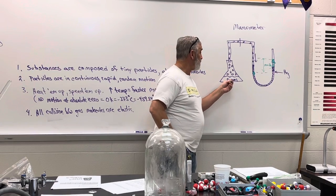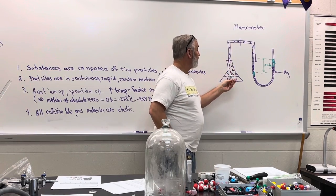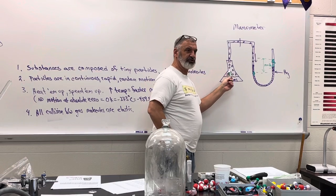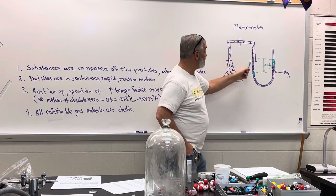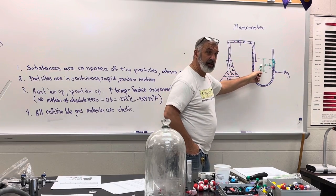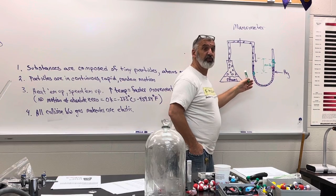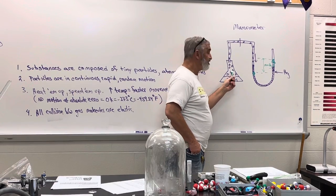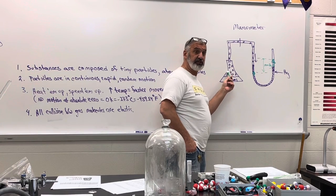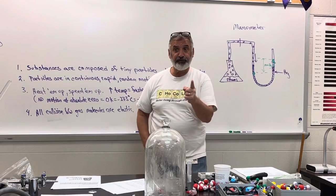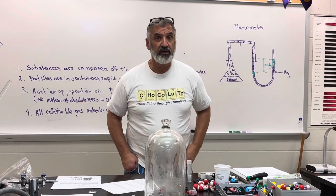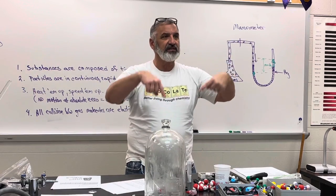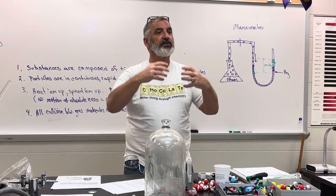If I heat this up, that's going to speed up the rate of evaporation. More vapor molecules means the vapor pressure goes up, pushing down farther and up higher — more millimeters of mercury supported. If I put water in here instead of ethanol, water won't evaporate as fast, so fewer vapor molecules and lower vapor pressure. The lower the attractive forces, the higher the vapor pressure — the more readily it evaporates, the more vapor molecules you have, and the greater the vapor pressure.